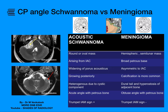Coming to the other case, you can see a well-defined lesion slightly posterior to the left CP angle which is extra-axial and causing indentation over the left cerebellar hemisphere. So this is a case of right acoustic schwannoma and this is a case of left CP angle meningioma. Let us see the differences between schwannoma and meningioma in the CP angle, as these two are the most common lesions in the CP angle.